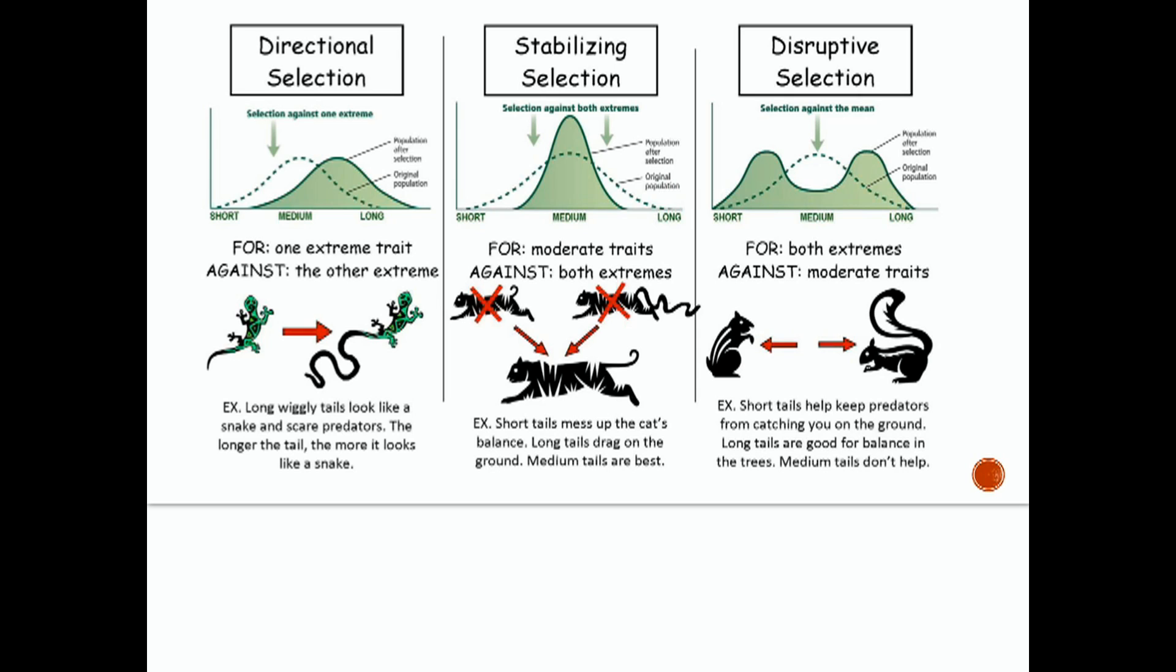Here's a stabilizing selection example. You still have the short, medium, and long tails across your x-axis and we're looking at this cat. Short tails mess up the cat's balance and long tails drag on the ground. This is stabilizing selection where it favors the medium tails the best.